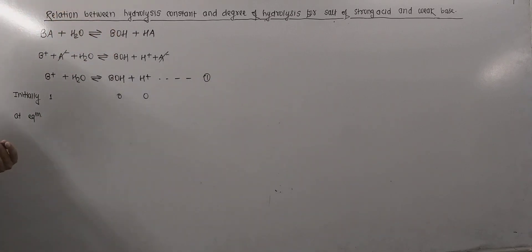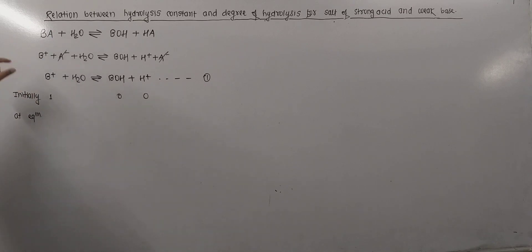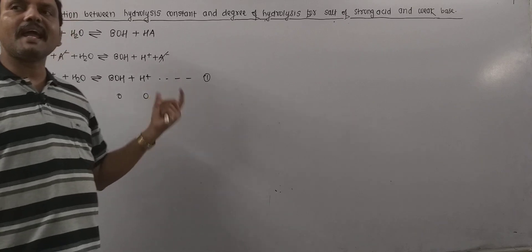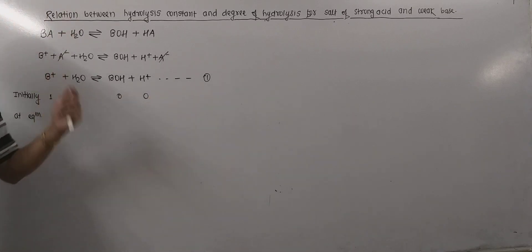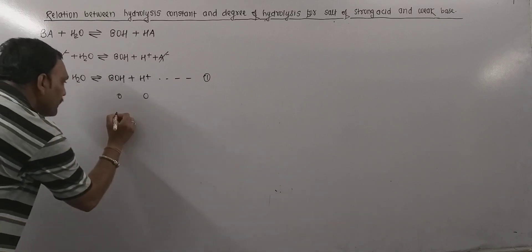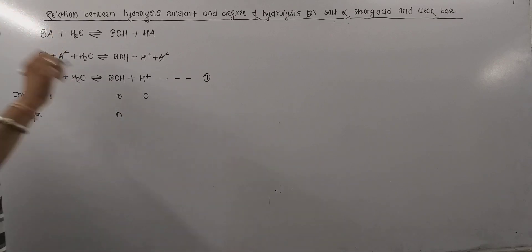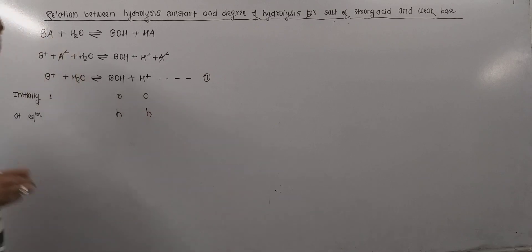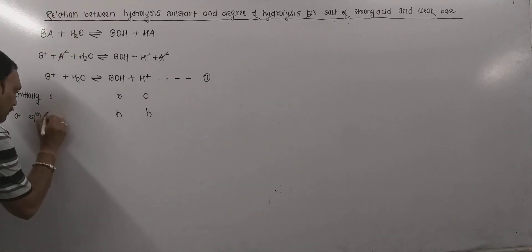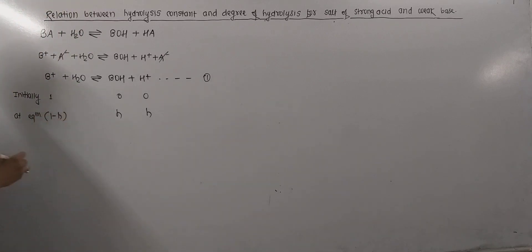Out of 1 mole of B⁺, let H moles get hydrolyzed. Then the number of moles of BOH present will be H, the number of moles of H⁺ will also be H, and the B⁺ remaining unhydrolyzed will be 1 − H.